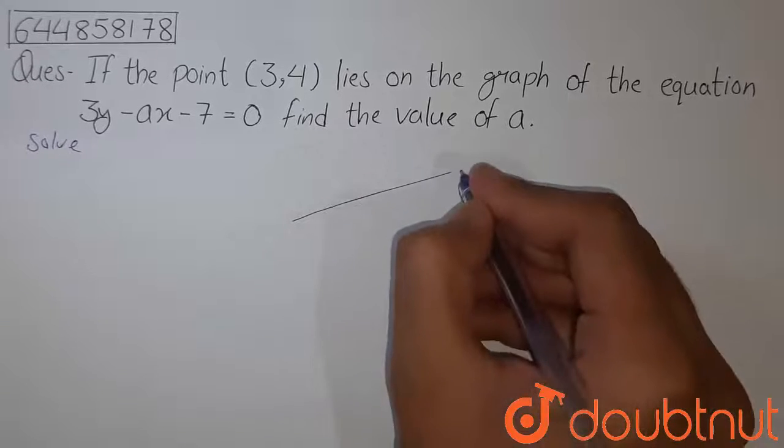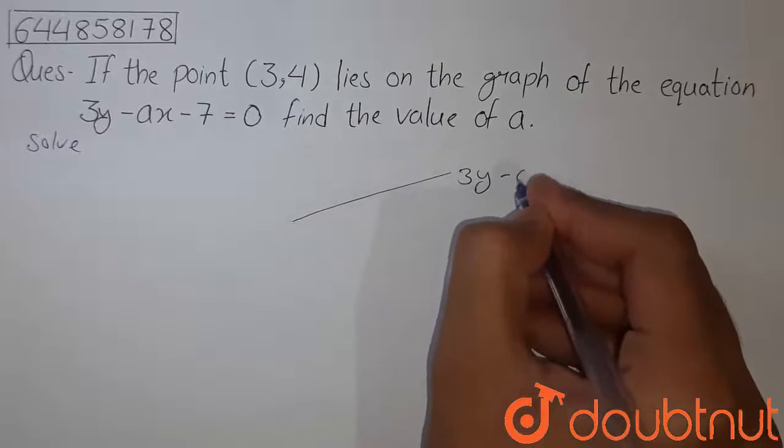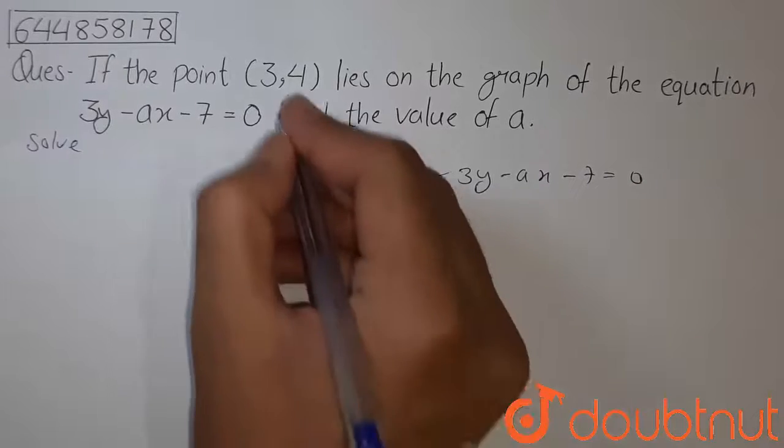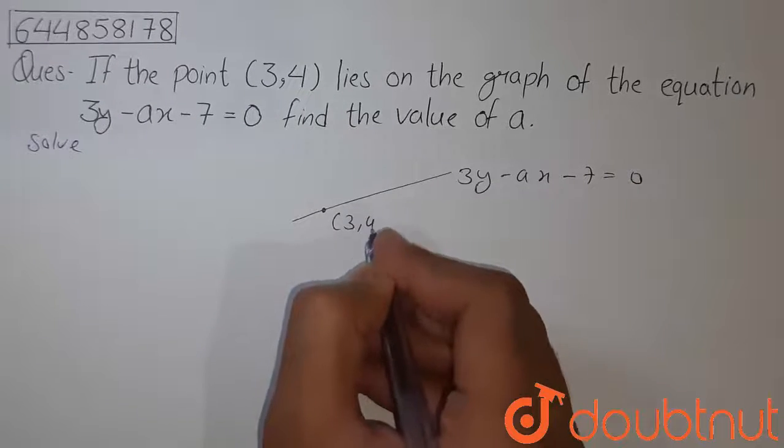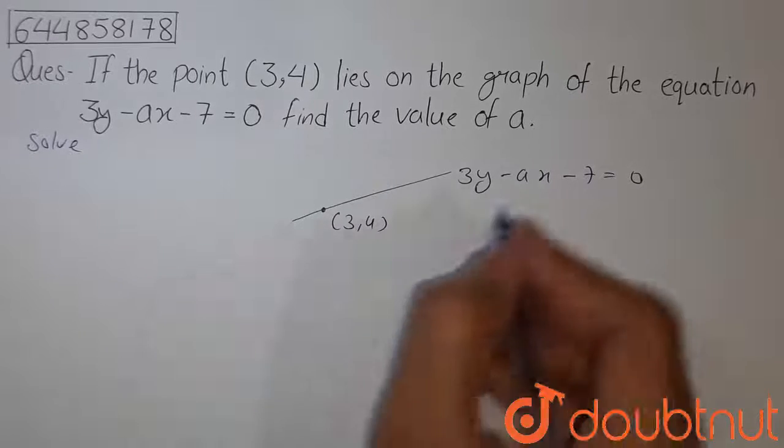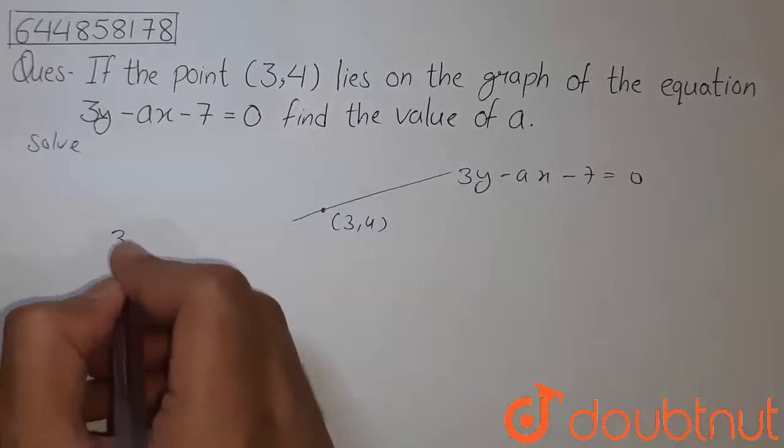Somewhere point (3,4) lies on the line, so this point satisfies the equation of the line. So putting the value, we get 3y...